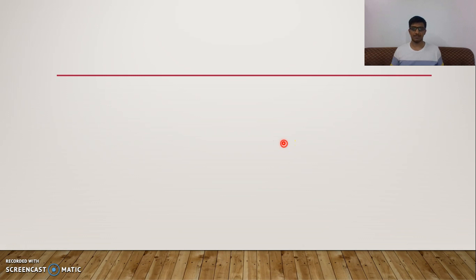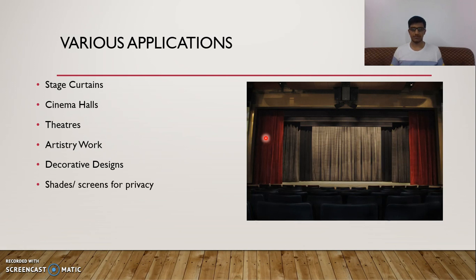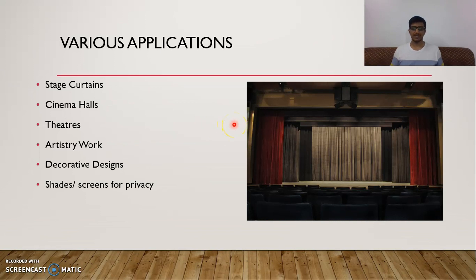Coming to the applications of the cable mechanism: we took our project mainly for stage curtains. They can also be used in cinema halls, theatres, artistry work, and decorative designs — for people who want to portray their art using curtains, making it look much more beautiful in their homes or workplaces. This mechanism, which is very minimalistic and cost-effective, can also be used as shades and screens for privacy. This is how we made our cable mechanism for controlling stage curtains, and even automated it using a switch. For any further questions, please do let us know. Thank you.